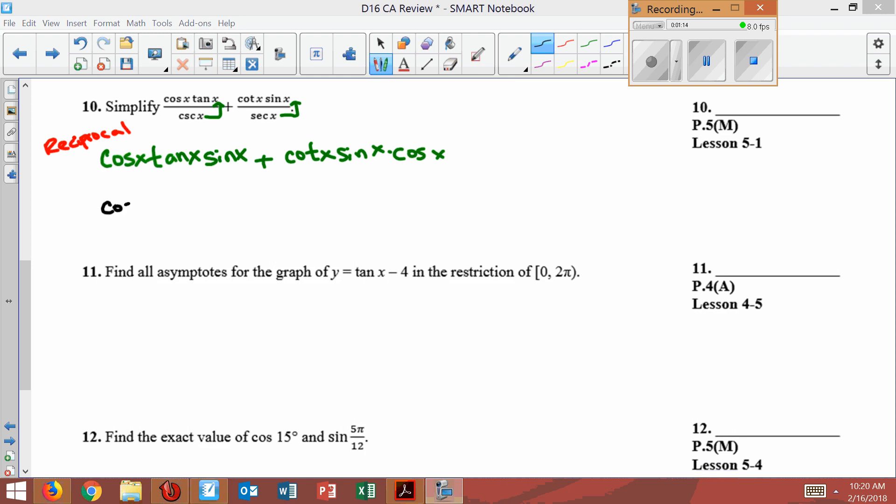So cosine stays the same. Tangent is the same thing as sine over cosine. And then this is sine plus cotangent. Cotangent is cosine over sine, so this would be cosine over sine.